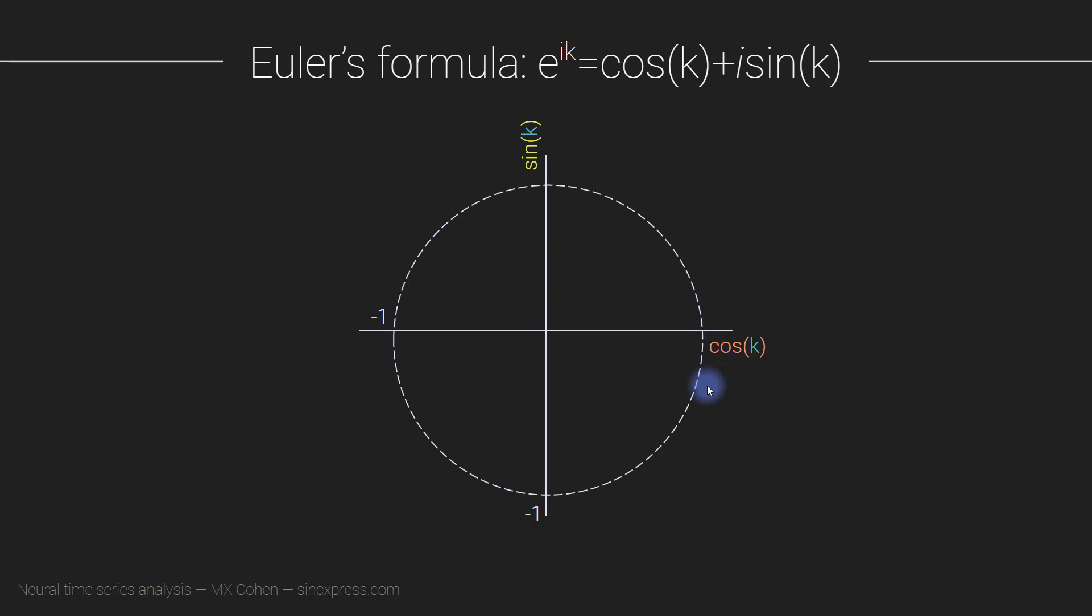And here we have a complex plane. This is a polar plot here, where we have a cosine axis and a sine axis. This is really similar to the complex plane that I showed in the previous video, where I called this the real axis and the imaginary axis. In fact, real and cosine and imaginary and sine can often be used interchangeably on the complex plane, and particularly in the context of Euler's formula. So cosine corresponds to the real axis, sine corresponds to the imaginary axis.